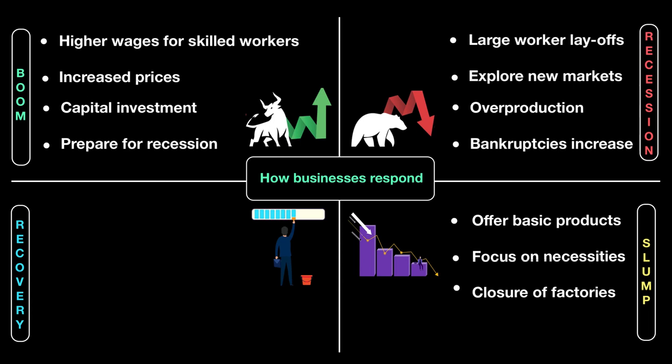During the slump, redundancies are still high as businesses are uncertain when recovery will come, so they minimize costs by downsizing the labor force. Then, after a period of slump, there will be a period of recovery — things are again taking a turn for the better and GDP is rising again. During recovery, consumers have more money to spend, so businesses are able to increase their prices to recover losses from the recession and slump period.